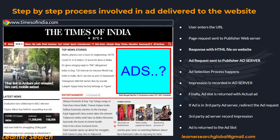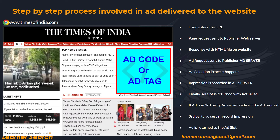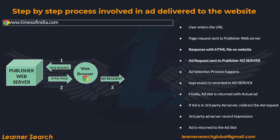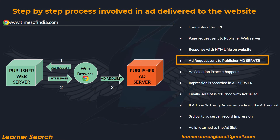How does the browser fill this ad space with an ad, and where does it get those ads from? On the web page, ad tags contain a set of instructions. The browser reads the ad tag and identifies each ad slot in the web page, then sends an ad request — which is not directed to the publisher web server this time, but instead routed to a separate server where ads are stored, known as the publisher ad server.